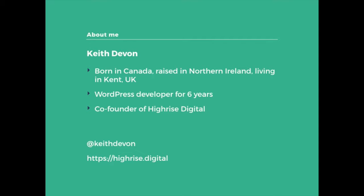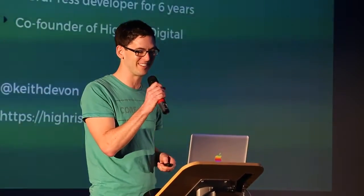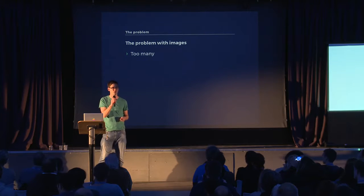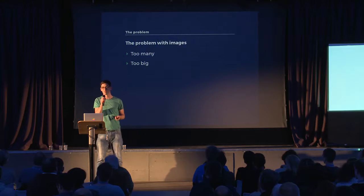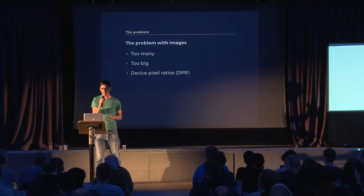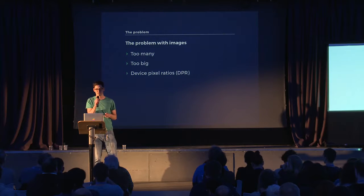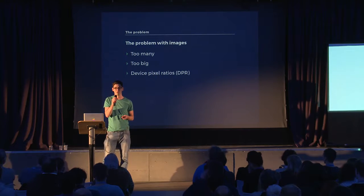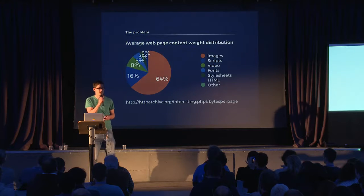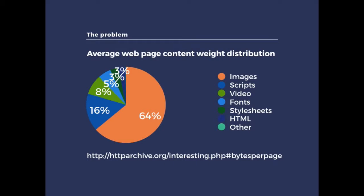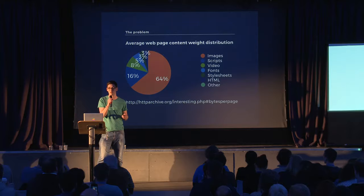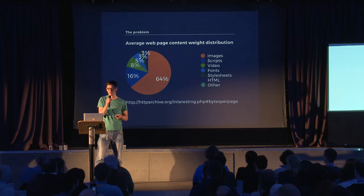So my name's Keith — we really don't have time for the about-me bit because I've only got ten minutes. The problem with images: what are the problems we're currently facing with images today? First up, we're using too many of them. Secondly, the images we're using are too big. And a more recent issue is device pixel ratios — things like retina screens and how we handle those. On the average webpage, 64% of the page weight is images. So there's a big, big opportunity for optimization.